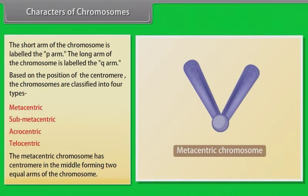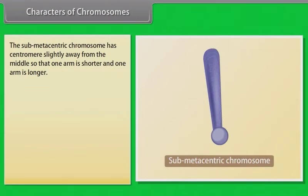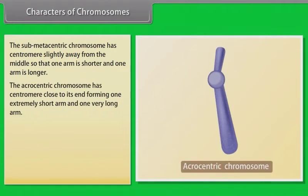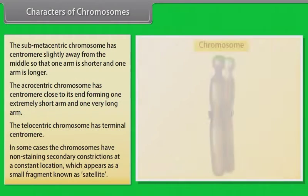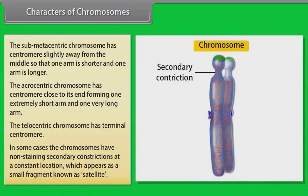The metacentric chromosome has the centromere in the middle, forming two equal arms. The sub-metacentric chromosome has the centromere slightly away from the middle, so one arm is shorter and one is longer. The acrocentric chromosome has the centromere close to its end, forming one extremely short arm and one very long arm. The telocentric chromosome has a terminal centromere. In some cases, chromosomes have non-staining secondary constrictions at constant locations, appearing as a small fragment known as a satellite.